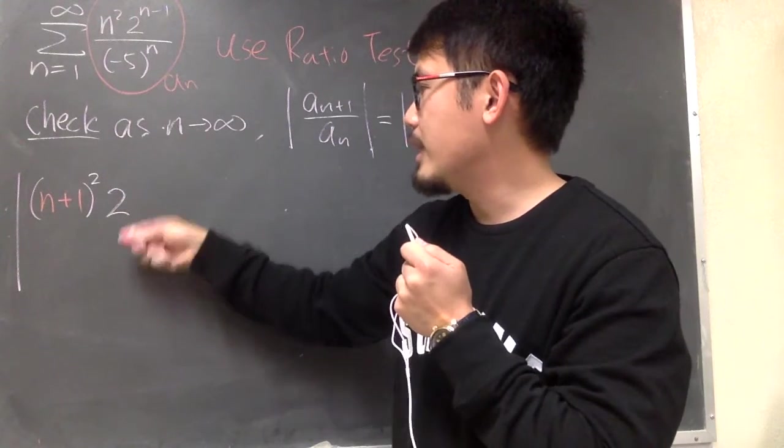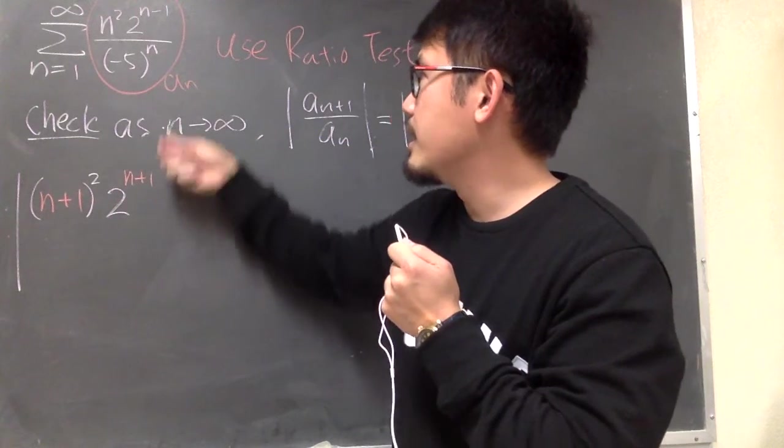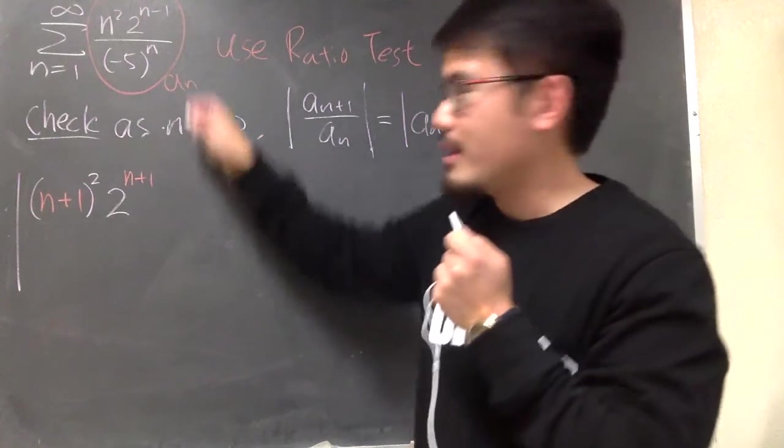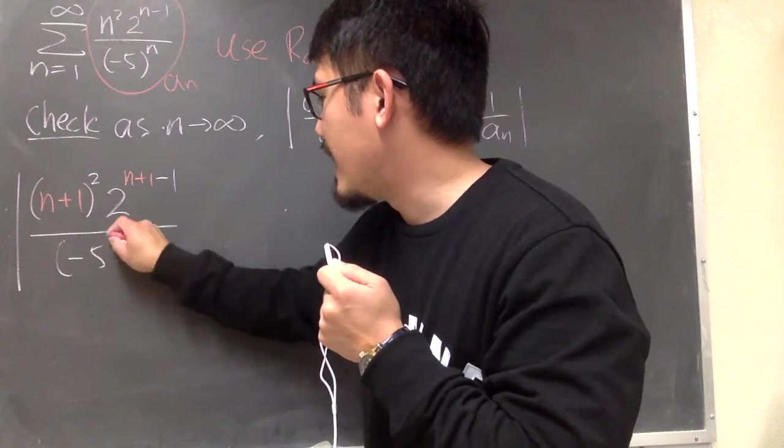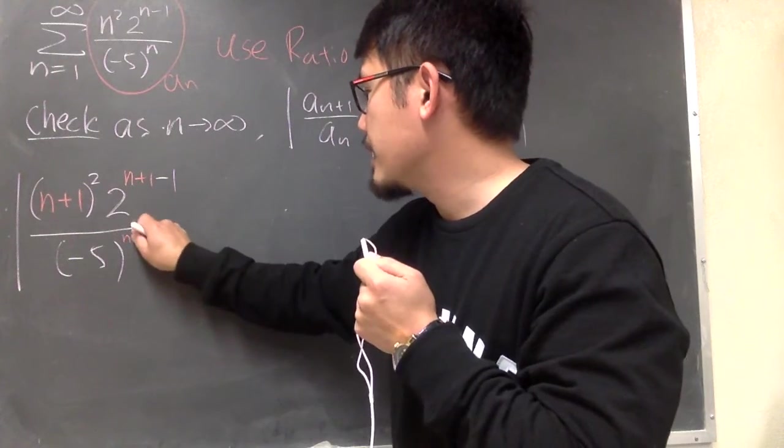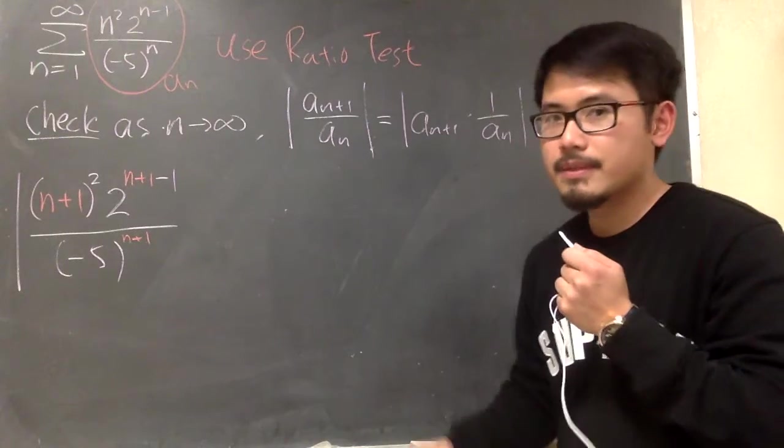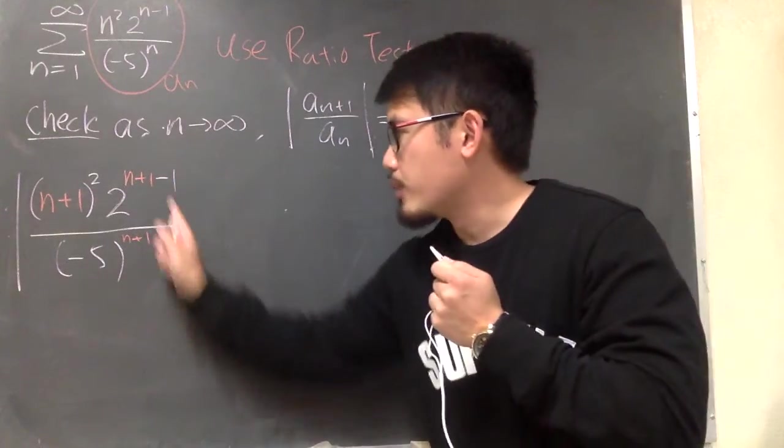So we get 2, and then we have n plus 1, and then at the end, we have the minus 1. Over, in the denominator, we have negative 5. This n becomes n plus 1, like that. So that's a n plus 1 right here.